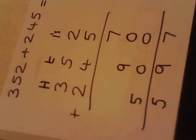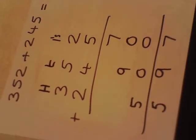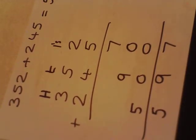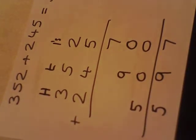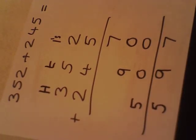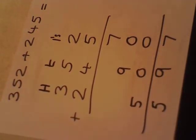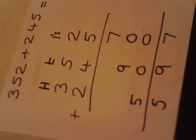So, 2 add 5 is 7. And then 50 add 40 is 90. And then 300 and 200 is 500.